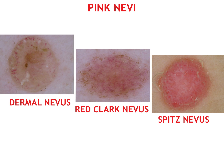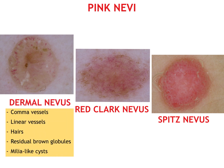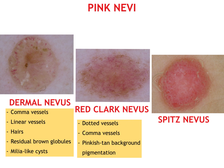It's not so uncommon to find in our patients nevi without pigmentation. Among them, dermal nevus is the most frequent and it shows at dermoscopy some features like comma or linear vessels, terminal hairs, and sometimes residual brown globules or milia-like cysts. Fair-skinned people could present red Clark nevi whose dermoscopy is characterized by dotted or comma vessels in a pinkish tan background.